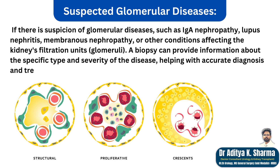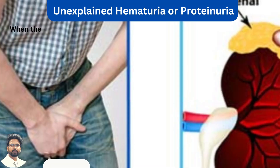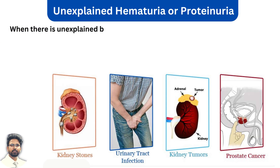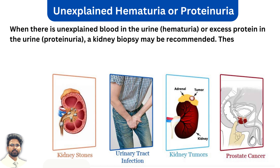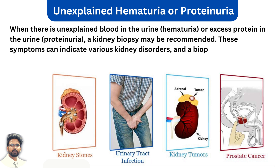When there is unexplained blood in the urine (hematuria) or excess protein in the urine (proteinuria), a kidney biopsy may be recommended. These symptoms can indicate various kidney disorders, and a biopsy can help determine the underlying cause.